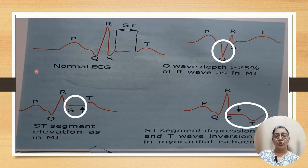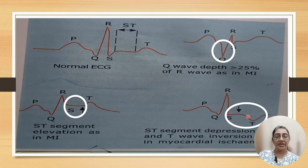Here is the normal ECG showing the ST segment. This is the ECG of an MI patient — the ST segment is elevated in MI. And in myocardial ischemia, the ST segment is flattened and depressed with T wave inversion. This shows T wave inversion and flattening of the ST segment in myocardial ischemia. Q wave depth is more than 25 percent of R wave amplitude in myocardial infarction.